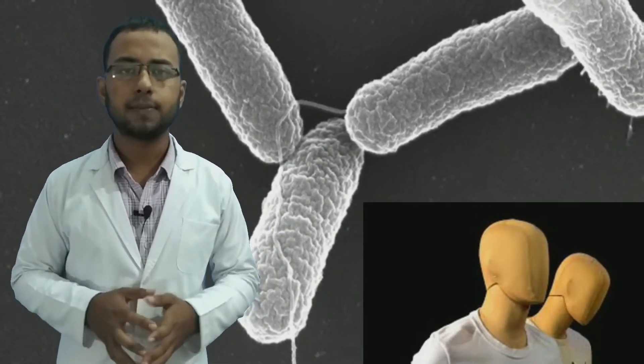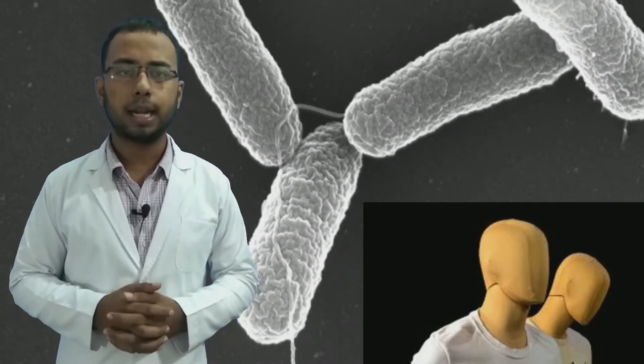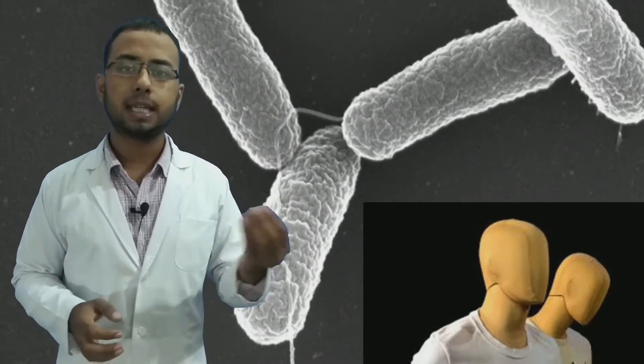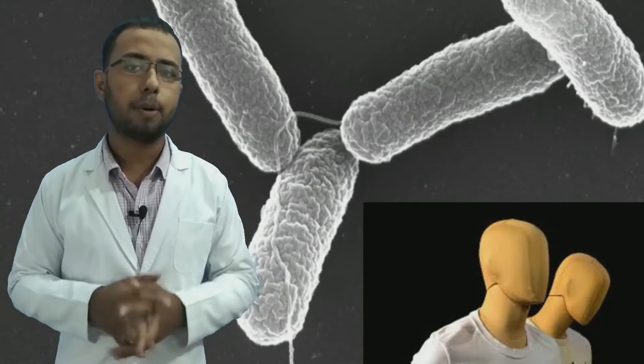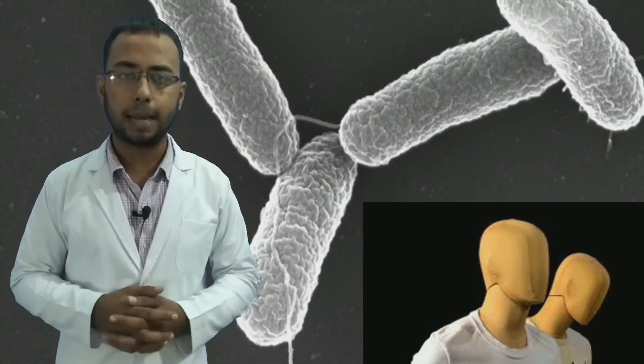There are lots of Salmonella species found which cause problems in different mammals, but this Salmonella typhi causes severe illness in humans only. It creates several complications because it lives inside the cell, not on its surface, that's why our immune system is not properly able to work against it.